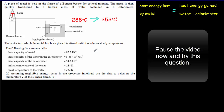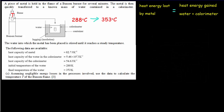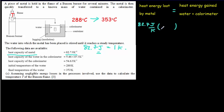The heat capacity of the metal is 82.7 joules per Kelvin — so 82.7 joules is equivalent to one degree Kelvin change. To find the number of joules, we take 82.7 joules per Kelvin and multiply by the temperature change, which is T minus 353 Kelvin. The Kelvins cancel out and we're left with joules of energy.